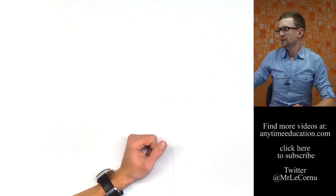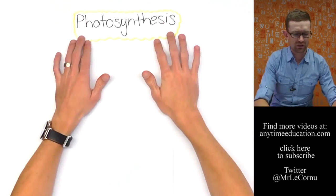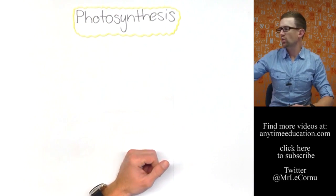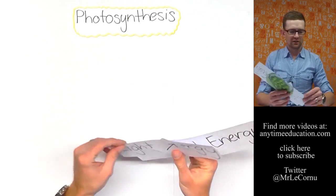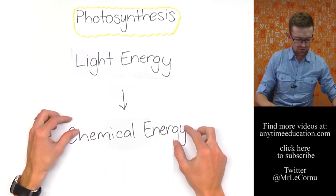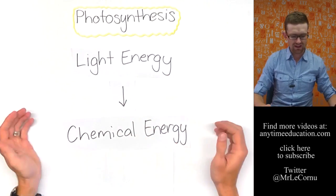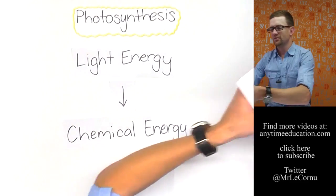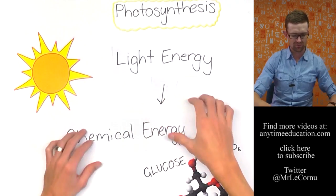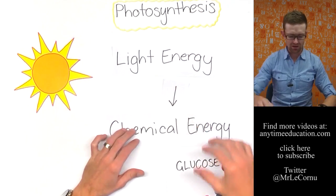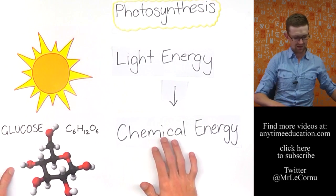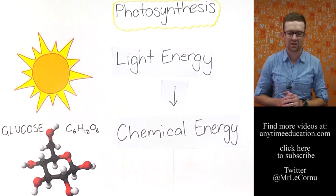So put very simply the process that takes place in photosynthesis is a transformation of energy. A really important transformation of energy. The transformation of light energy into chemical energy. And of course the light energy that we're talking about is usually sunlight. I'll just put this big huge sun in over here. And the chemical energy that we're referring to is glucose. C6H12O6. A complex organic compound.